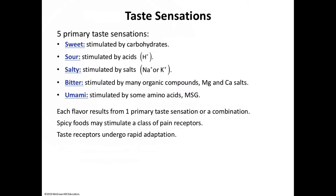Bitter taste is elicited by alkaloids such as quinine, nicotine, caffeine, morphine, and strychnine. Other non-alkaloid substances such as aspirin are also bitter. Inorganic salts including magnesium and calcium can also produce bitter sensations. Extreme sensitivity to bitter tastes is inherited, which is why diet colas taste sweet to some people but bitter to others.